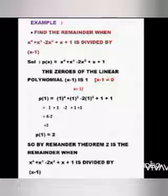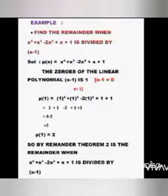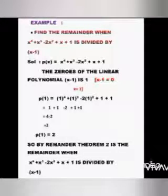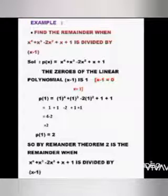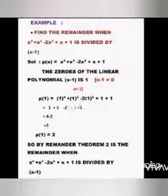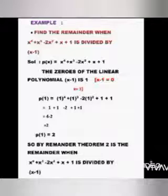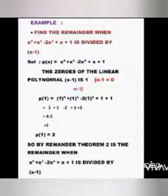So what is the zero of the linear polynomial x - 1? It is 1. That is, x - 1 = 0 gives x = 1. Now replace x by 1. So P(1) = 1⁴ + 1³ - 2 × 1² + 1 + 1. And 1⁴ is 1, plus 1³ is 1, and 1² is 1.